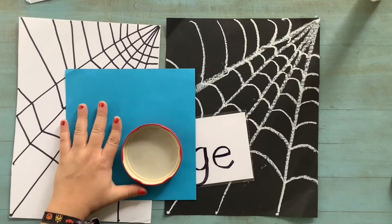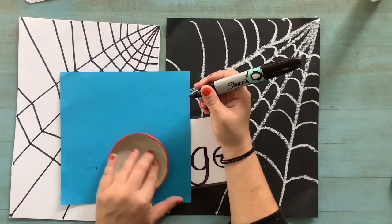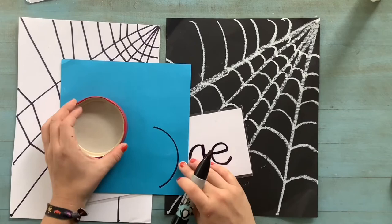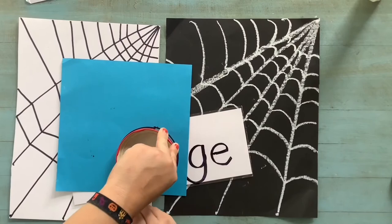Your helper hand is the hand that you do not write with. So with your helper hand, you want to hold that tracer very hard down so that your marker or pencil can go around the edge to create your circle. If it happens to pop out like mine just did, put it back just like a puzzle piece so that you can finish tracing your circle.